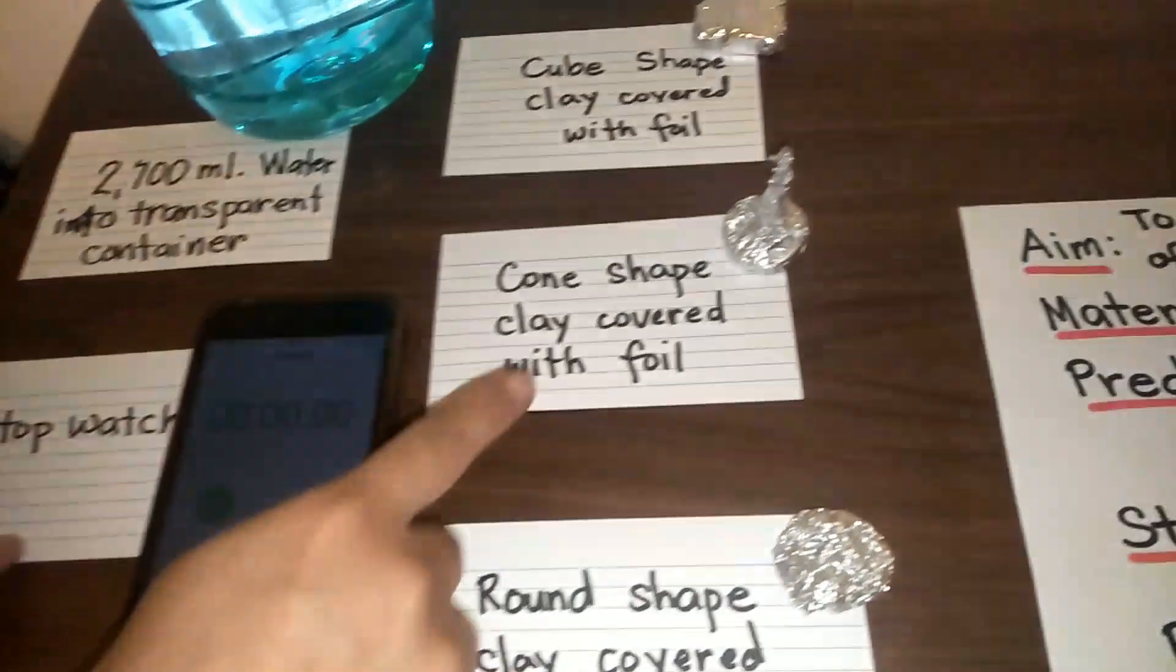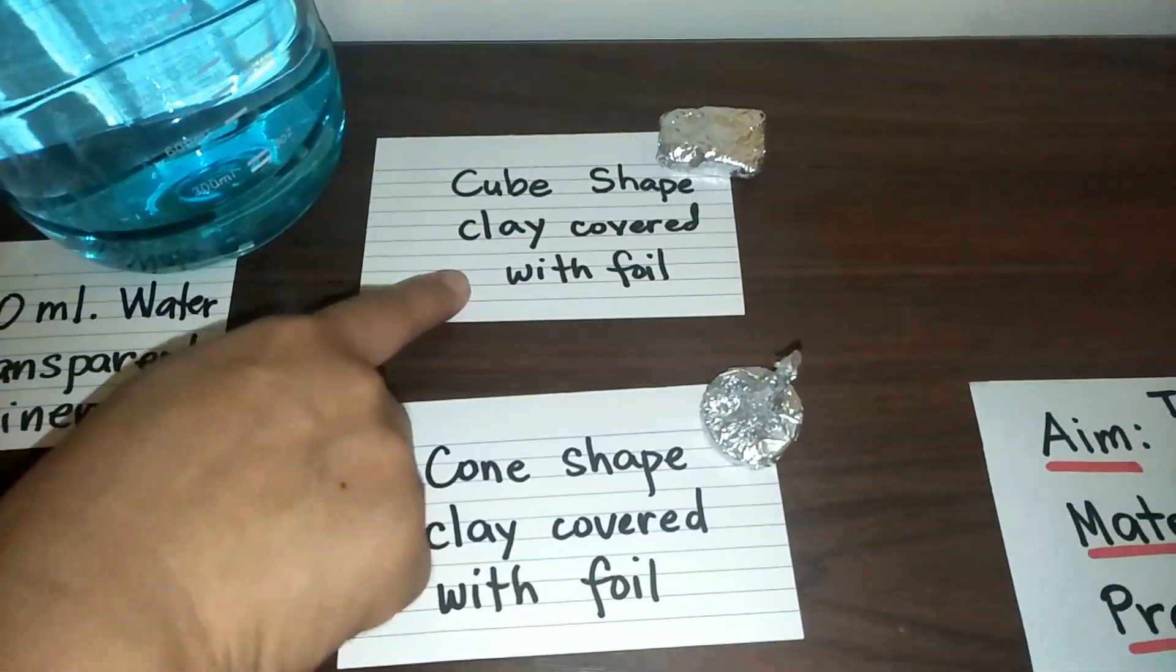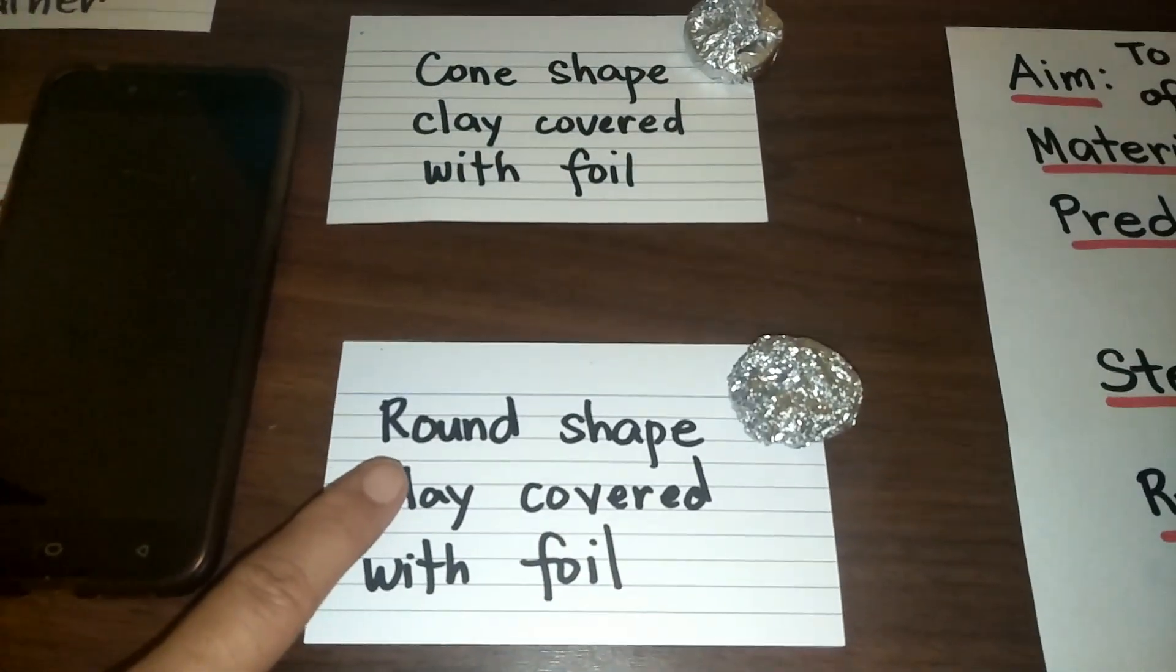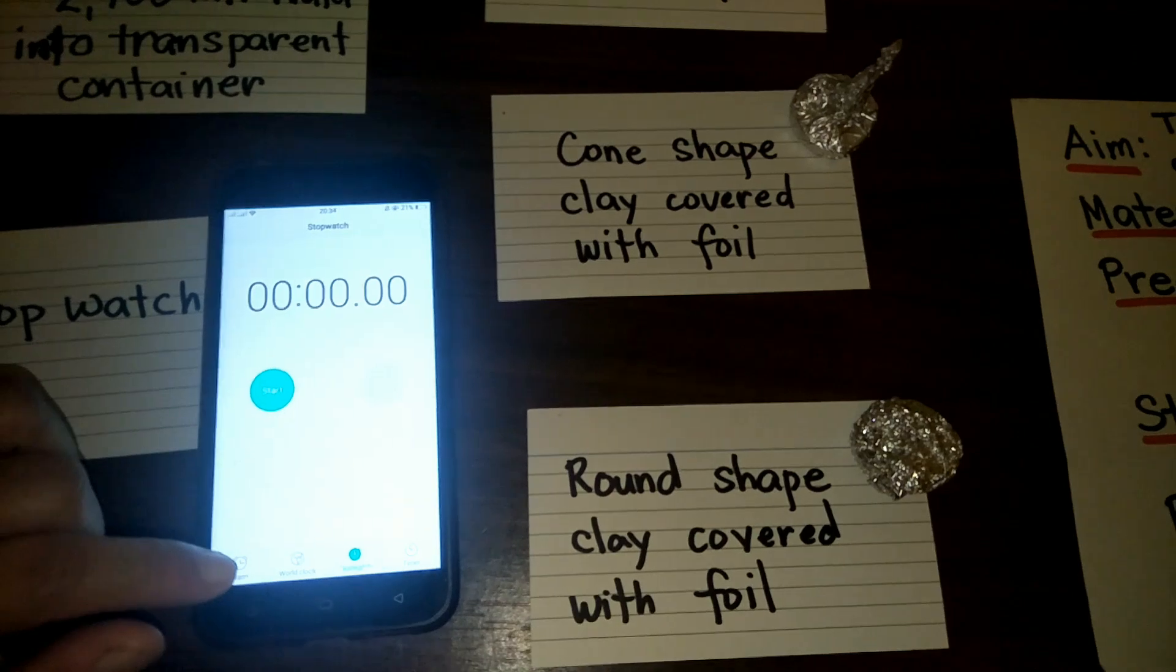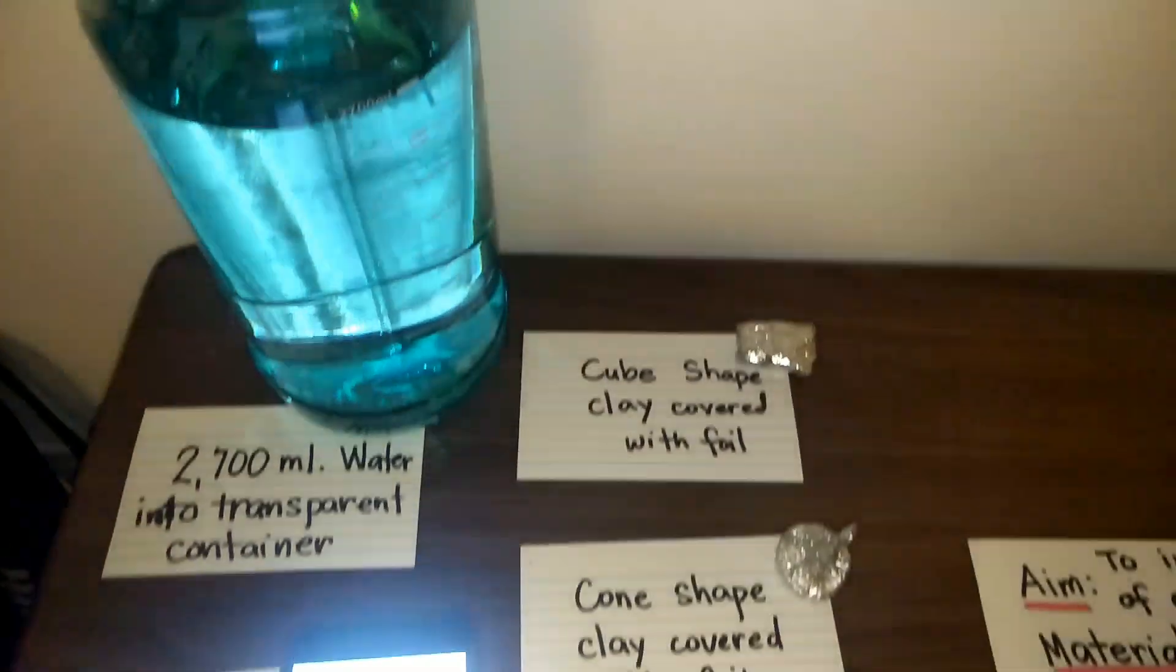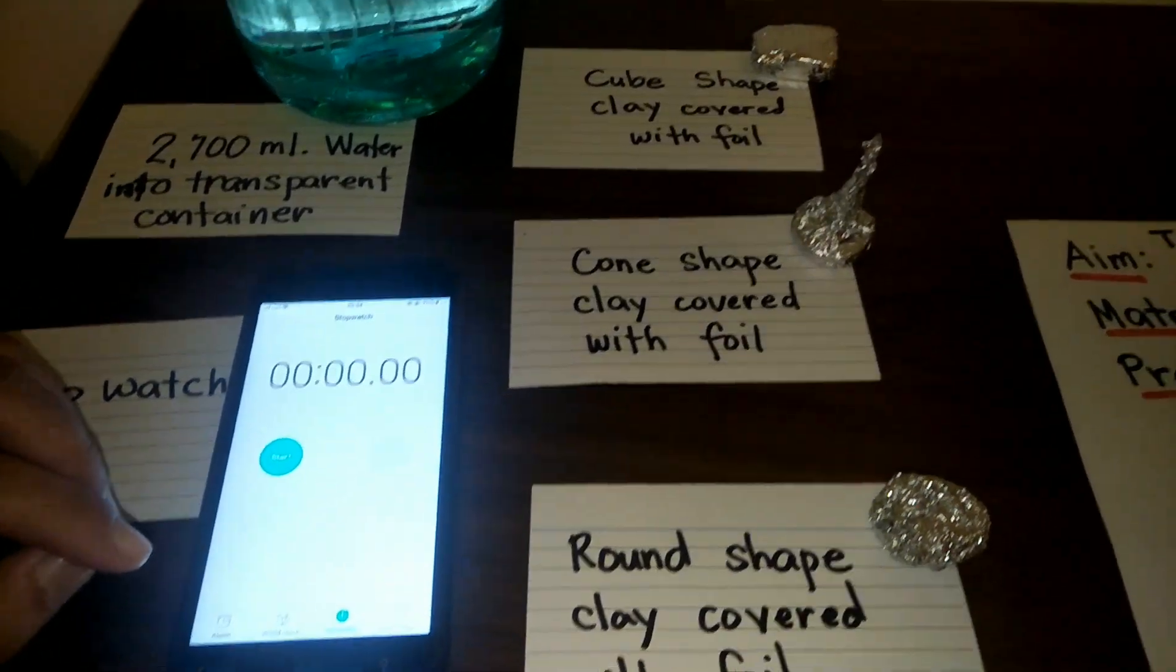Which of these shapes will sink faster? Cube shape, cone shape, or round shape? For the steps, you need to drop each piece one by one and record how long it takes to get to the bottom.